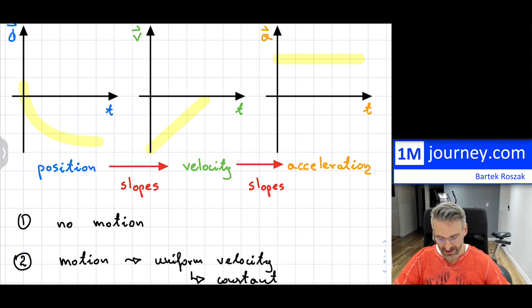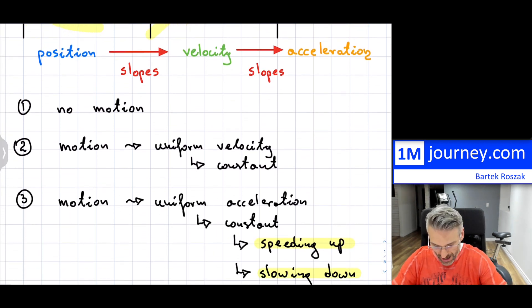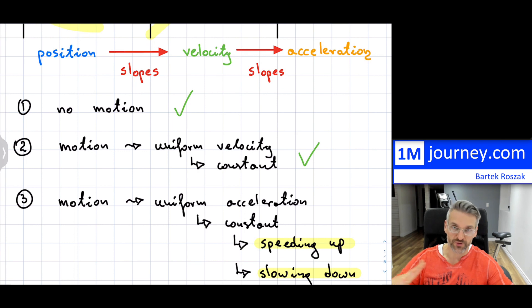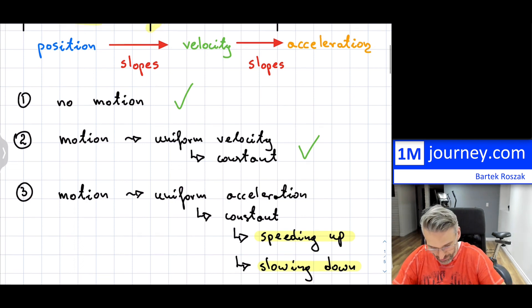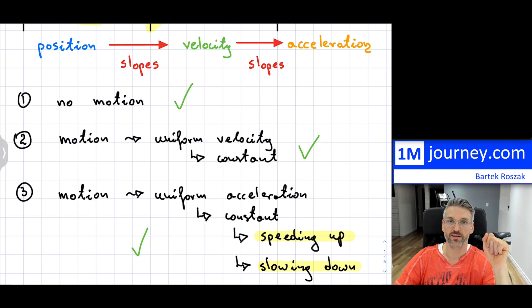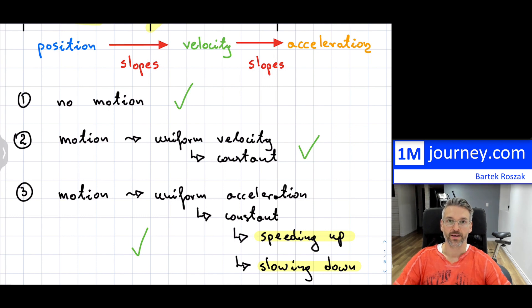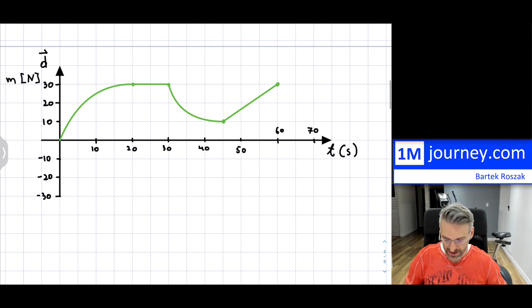Those are all the instances you can run into. You have no motion at all — very simple. You have motion with just straight lines on the position graph, and the velocity is either positive or negative. And then the most complicated case: speeding up in the positive direction, slowing down in the positive direction, speeding up in the negative direction, or slowing down in the negative direction. Understanding this is super crucial.